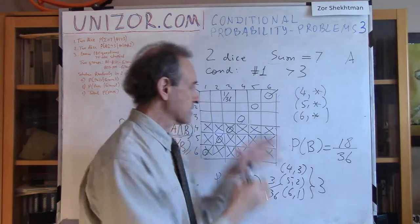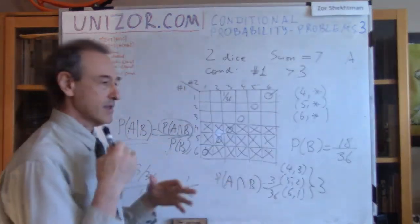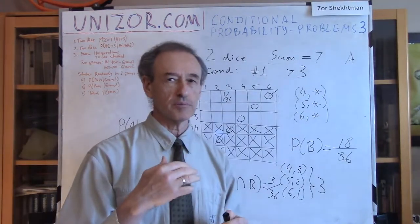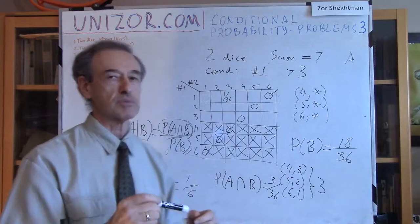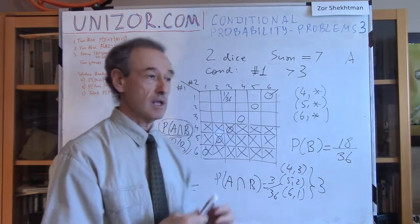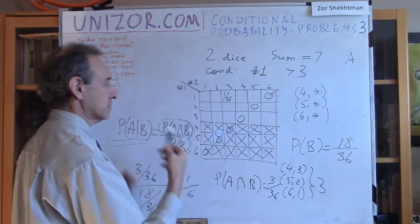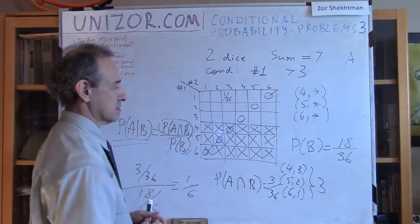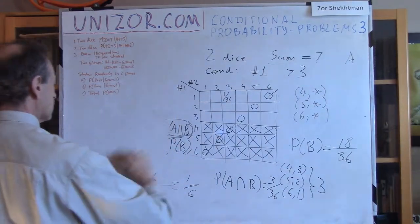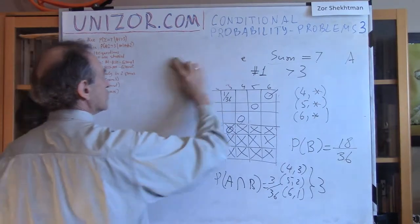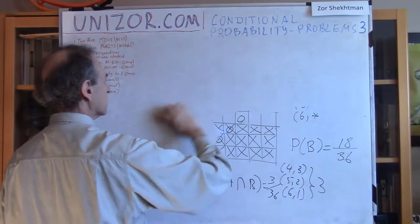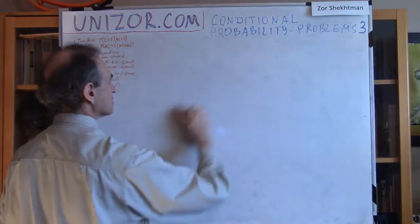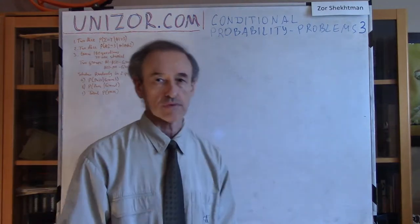I was trying to explain things graphically first, then using the formula. The graphical representation shows what conditional probability is all about: it's a relative measure of the favorable outcomes — the intersection of A and B — relative to the measure of the condition B. You can go directly to the formula, but the graphical representation is very valuable for understanding.